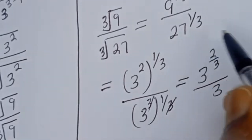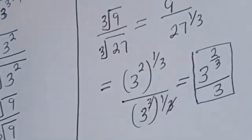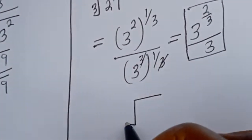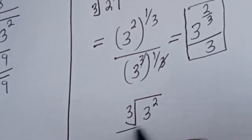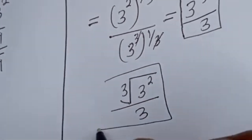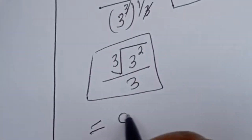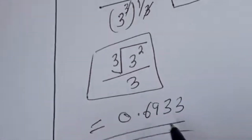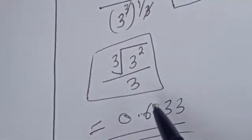This is the final answer. You may also write the answer in the form: the cube root of 3 squared, divided by 3. And of course if you press your calculator you are going to get 0.6933. I hope you enjoyed the video. Thank you for watching — please don't forget to like, share, comment, and subscribe to my channel. Bye bye!